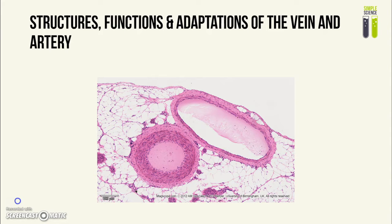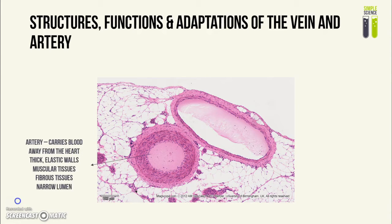First, the structure and adaptations of the vein and the artery. I have put them next to each other because often you would be asked to compare them — this is to show the contrast. The artery is the rounded one; it carries blood away from the heart. It has thick and elastic walls to withstand the high blood pressure it carries. It also has muscular tissues, which help withstand high blood pressure and take part in vasodilation and vasoconstriction in thermoregulation. It also has fibrous tissues, which prevent bursting, and it has a narrow lumen to maintain high blood pressure.